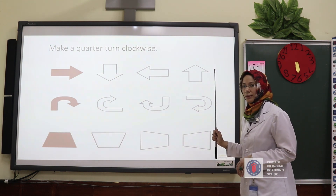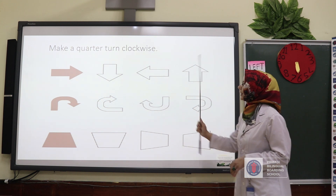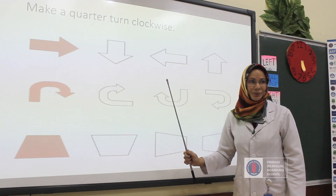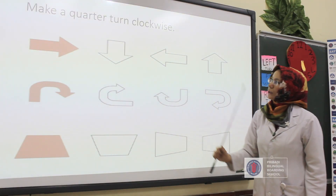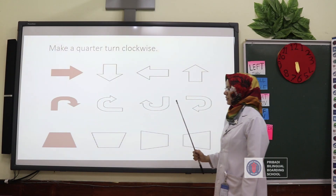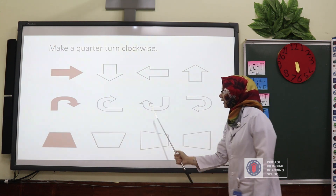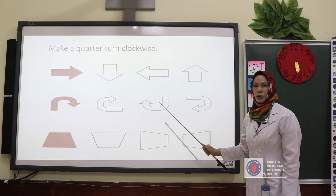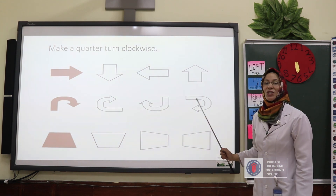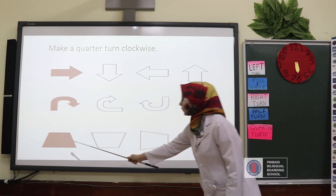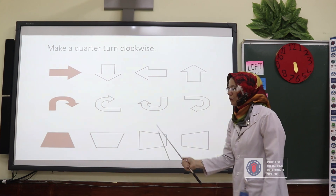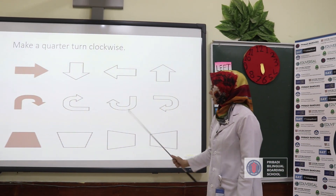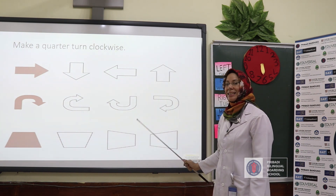What do you think — is it the first one, second one, or third one? Yes, you are right — the answer is the first one. How about this one? Turn clockwise and quarter turn — turn to the right side. When it turns, it's going to look like this shape. How about this one — turn to the right side, clockwise and quarter turn? It's going to be these shapes.